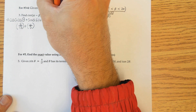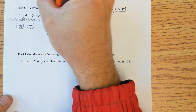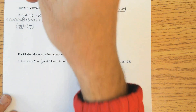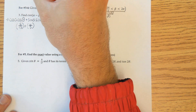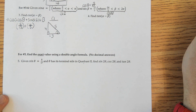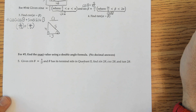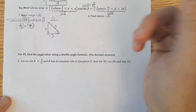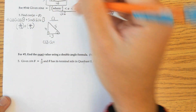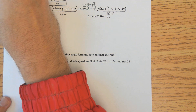Little a is in quadrant 2, so we go left and up — that's a right triangle. Sine equals opposite over hypotenuse, so the opposite side is 4 and the hypotenuse is 5. This is a Pythagorean triple, so the adjacent is negative 3 because in quadrant 2 the x value is negative — you went left. So cosine of little a equals adjacent over hypotenuse, which is negative 3 over 5.